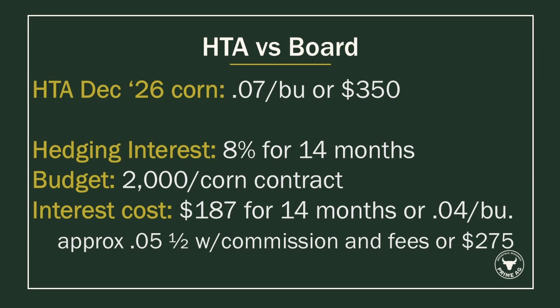We went with seven cents a bushel, which over a 14-month period comes out to about $350 in interest costs. When doing something like this on the board using a hedging line of credit, we're going to figure an eight percent interest rate for that same 14-month period. We're budgeting $2,000 against your line of credit — that breaks down to $770 in initial margin and about $1,230 for margin excess, which equates to about a 25-cent move in the corn market to give the hedge some breathing room. Taking eight percent on the $2,000 line of credit, you'd be at about $187 for that same 14 months, or about four cents a bushel.